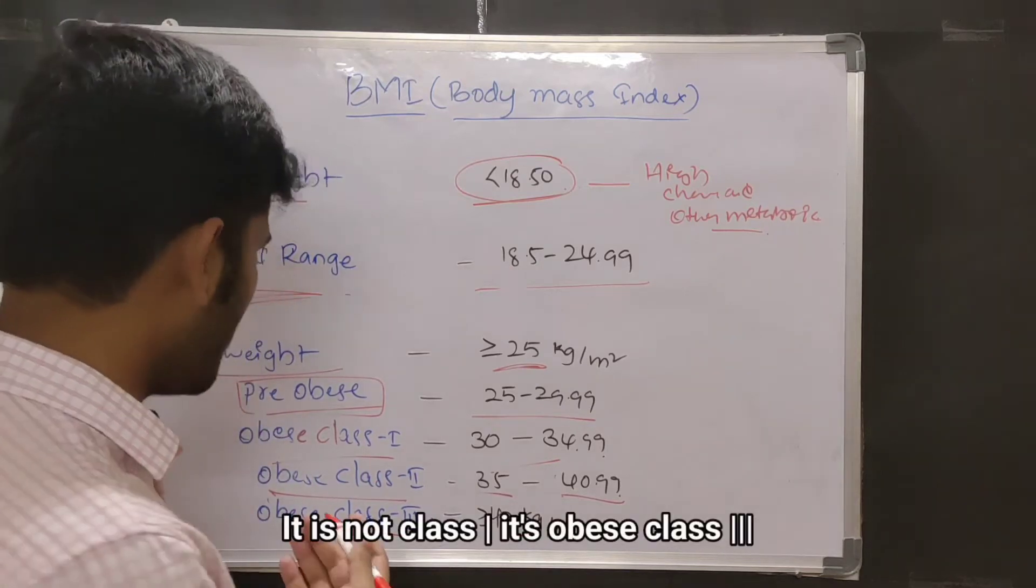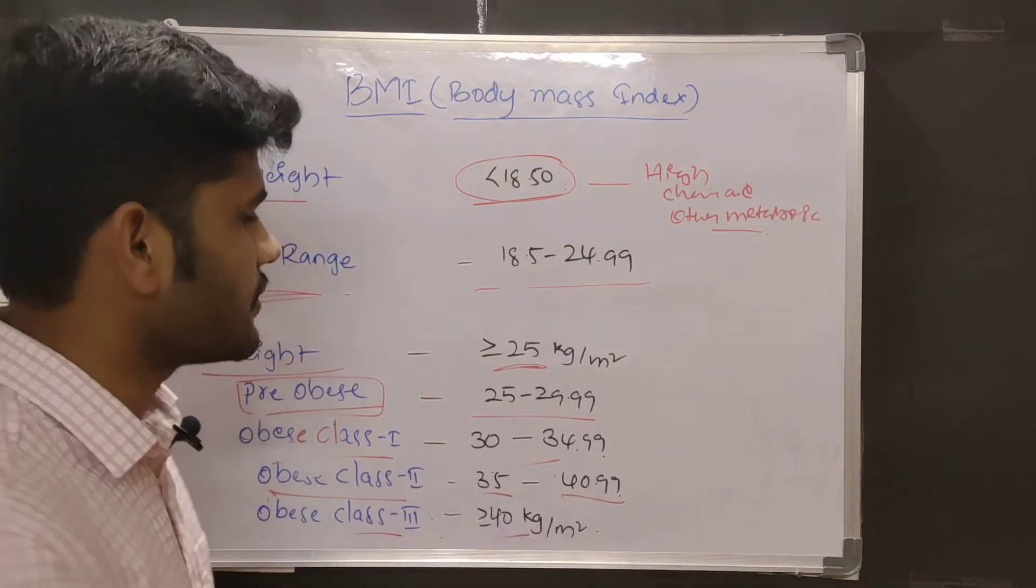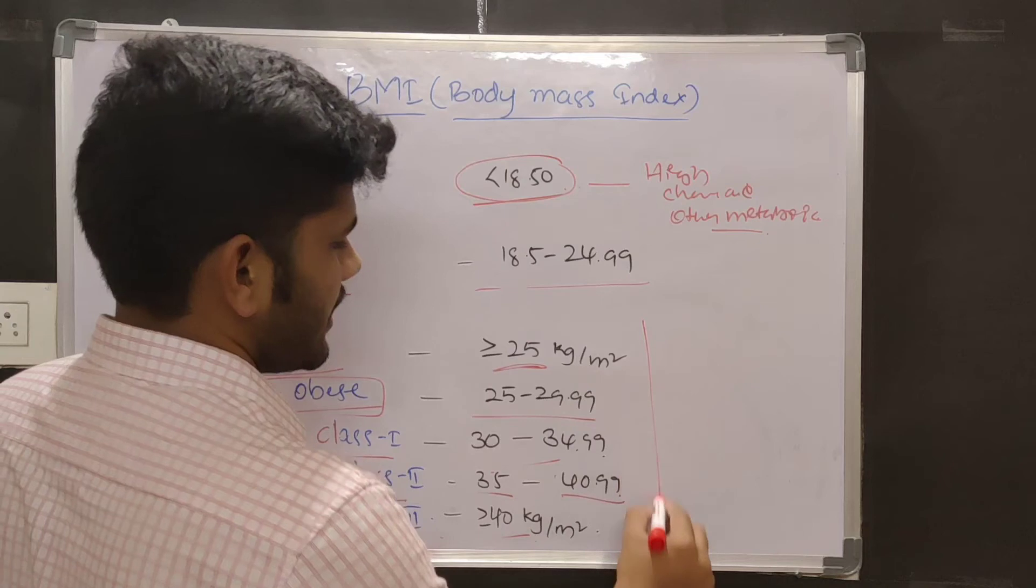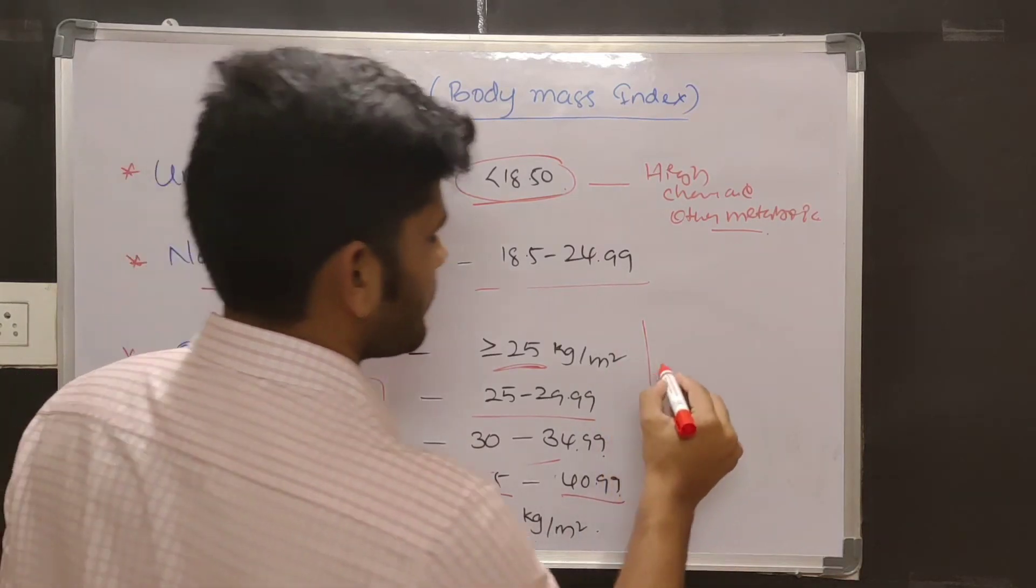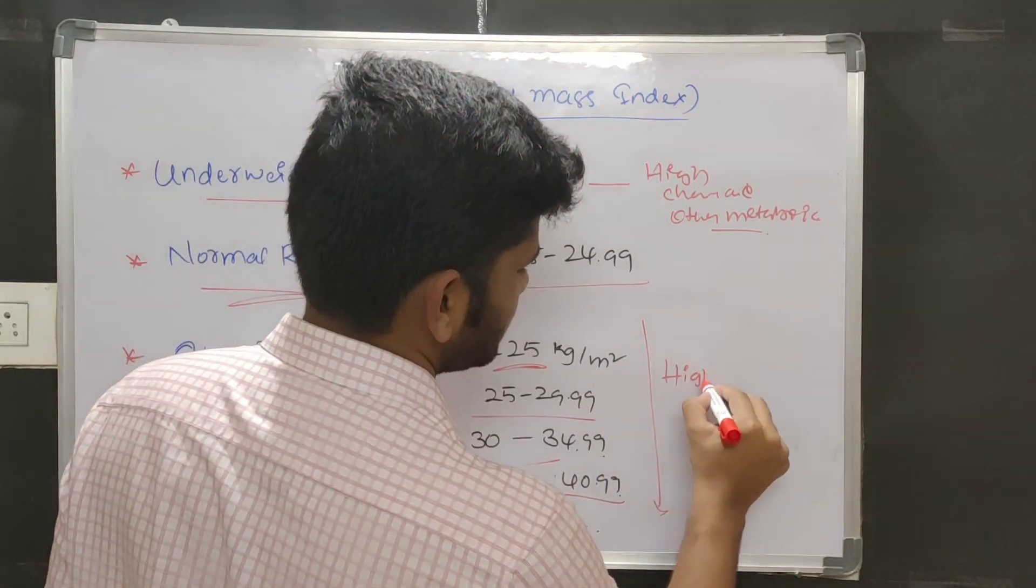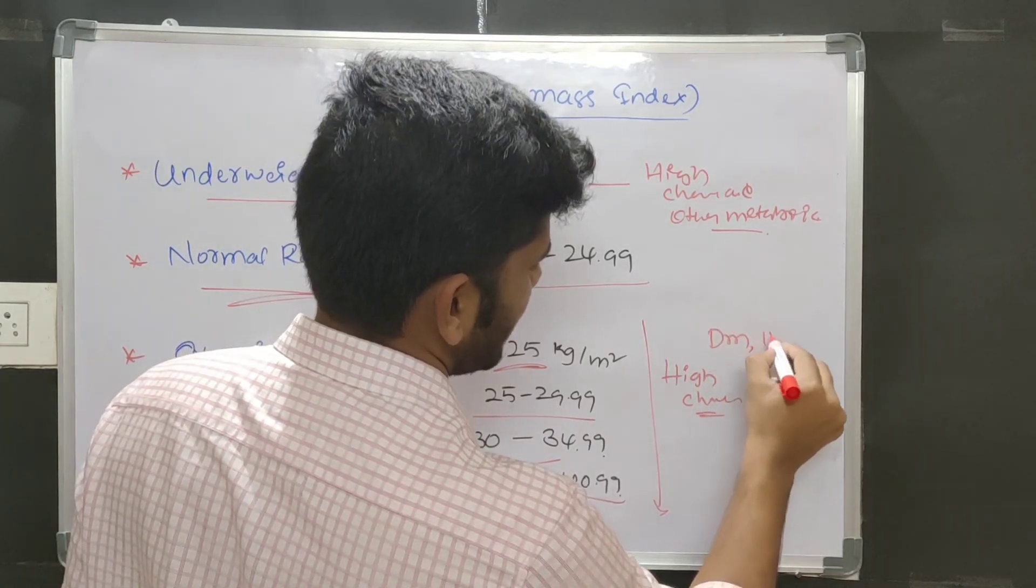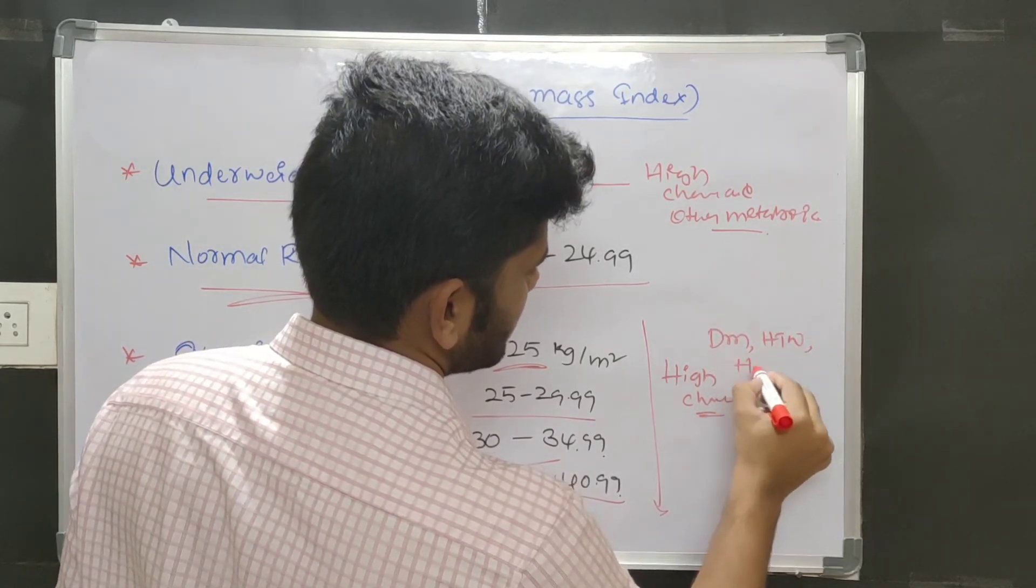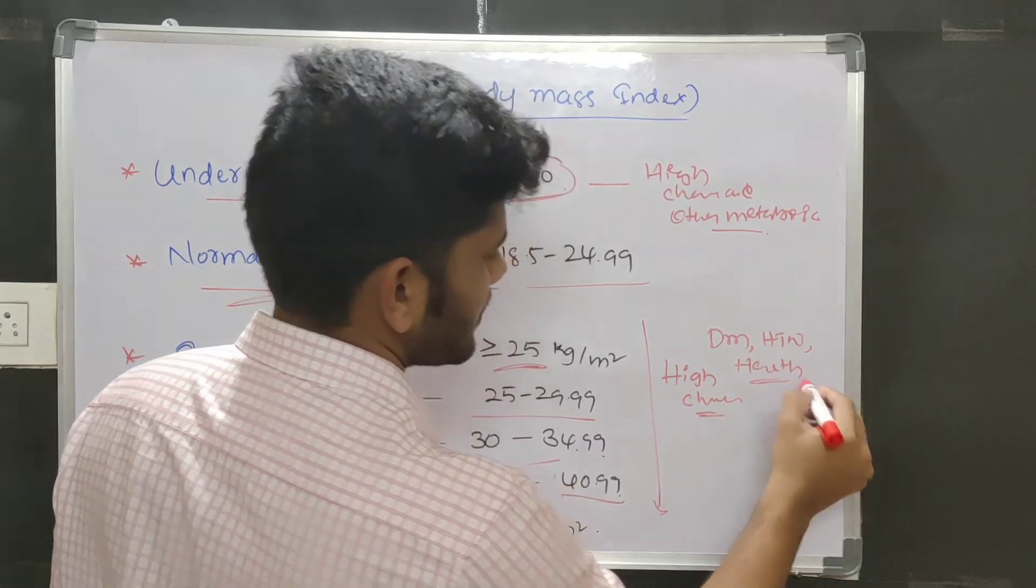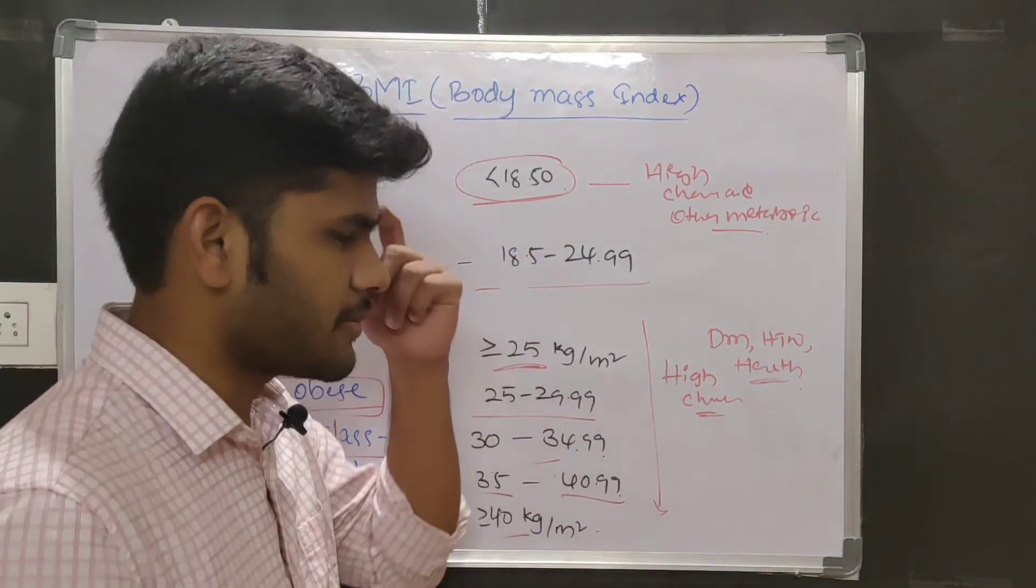So as the BMI increases, there is a high chance of comorbidities like diabetes mellitus, hypertension, heart problems, and some other metabolic disorders.